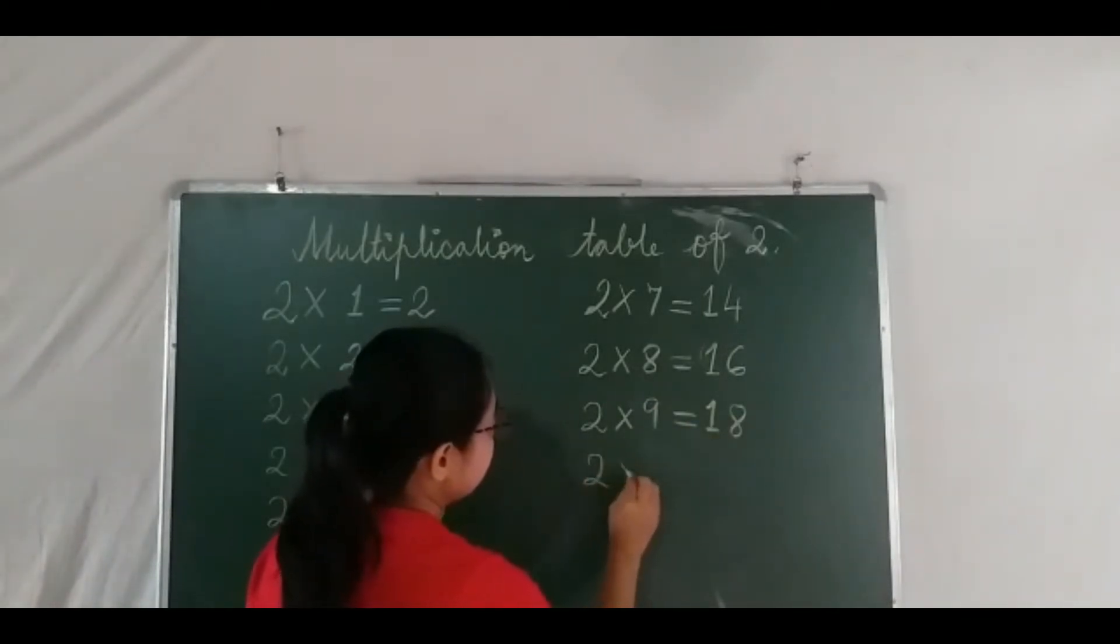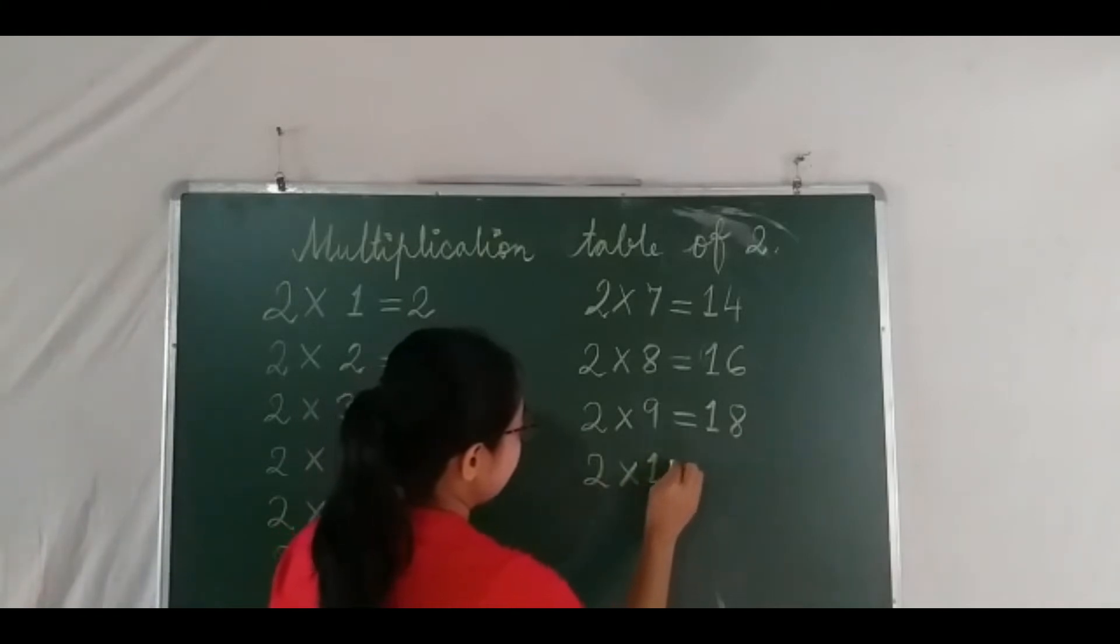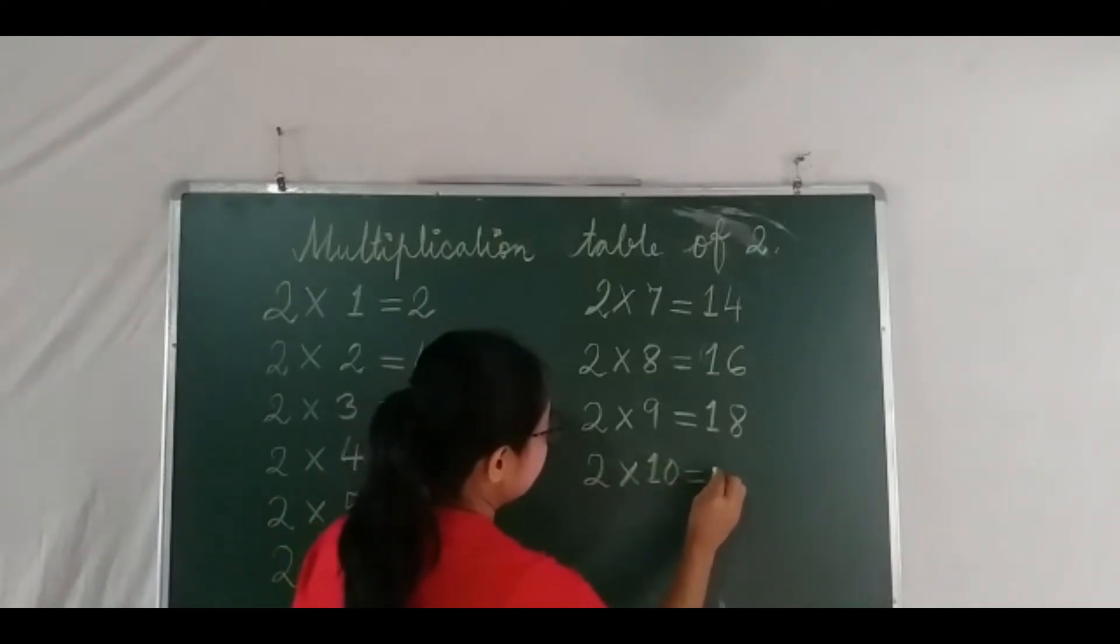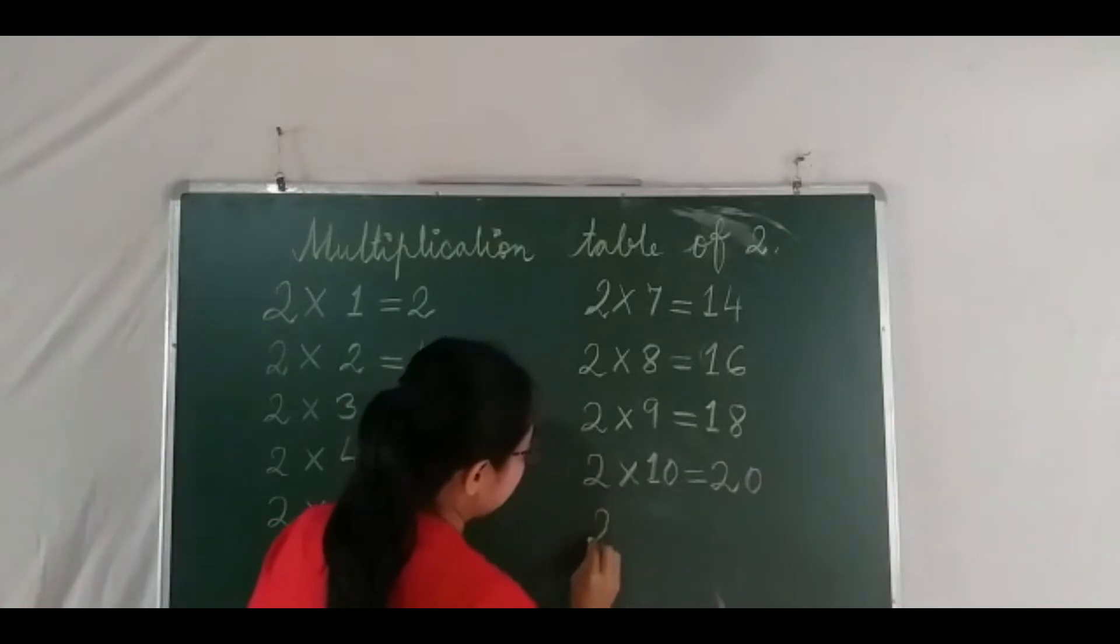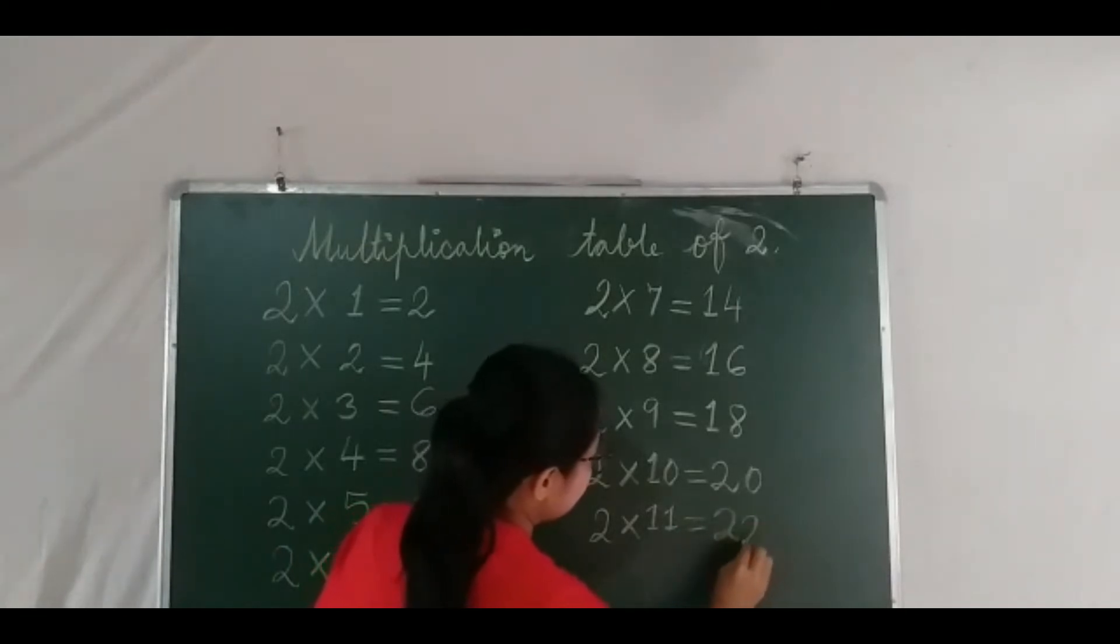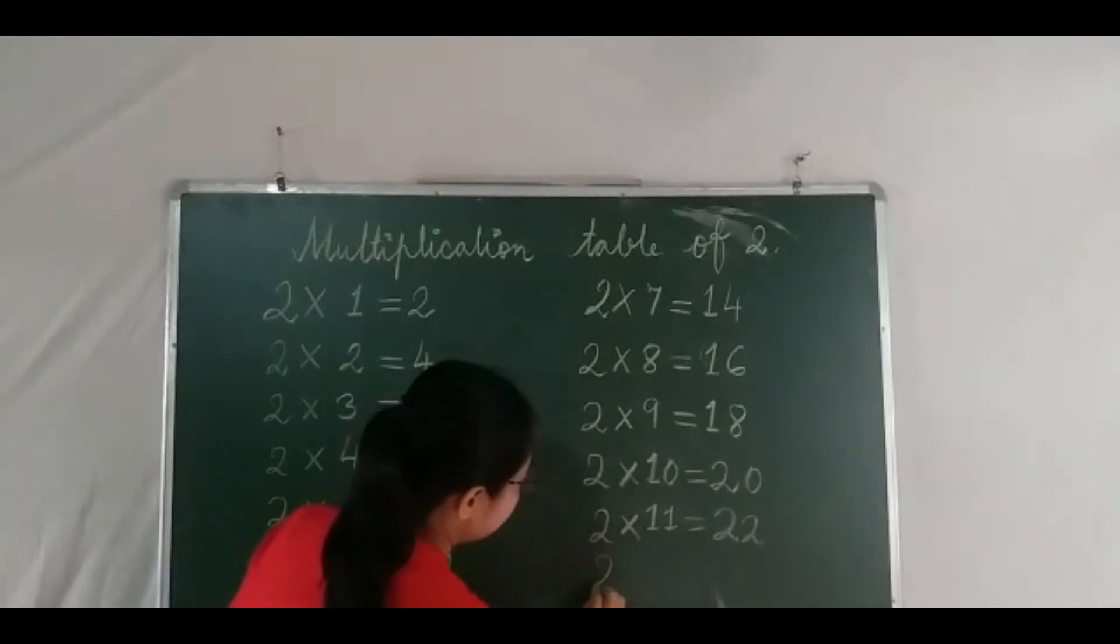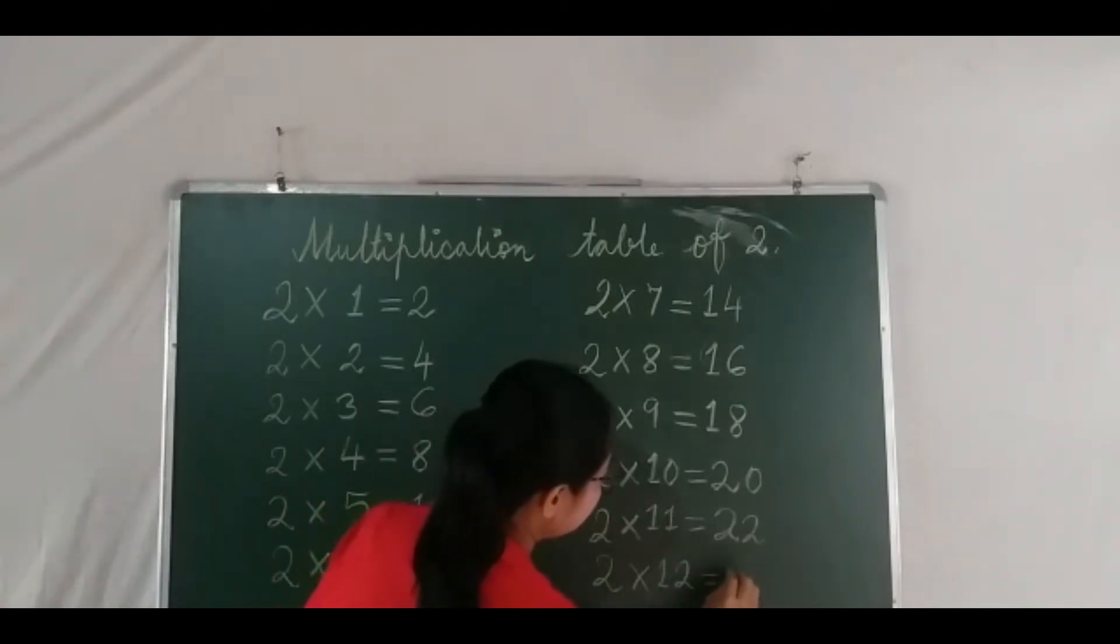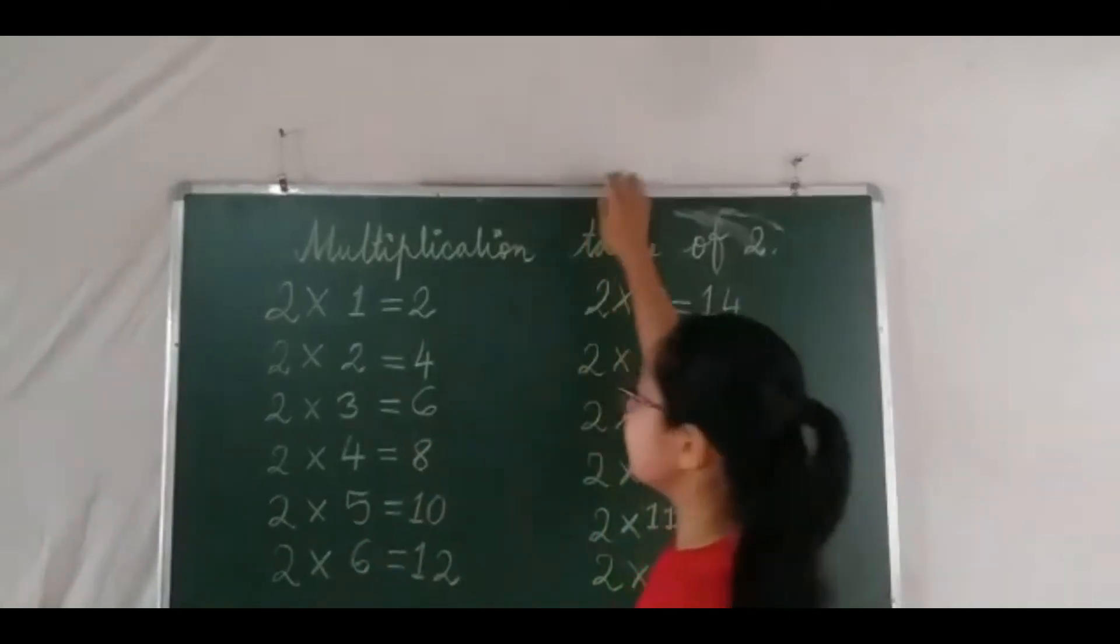Two tens are twenty, two elevens are twenty-two, two twelves are twenty-four. Now, let's read together.